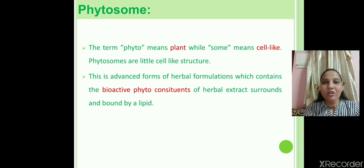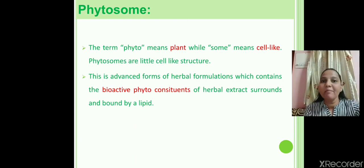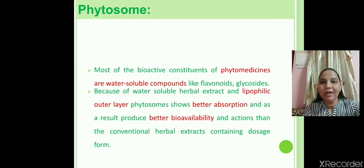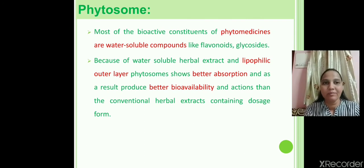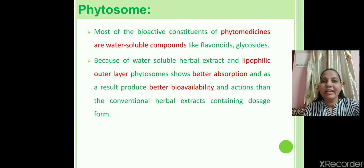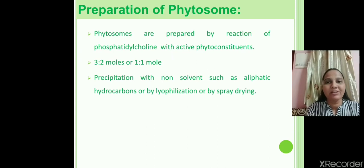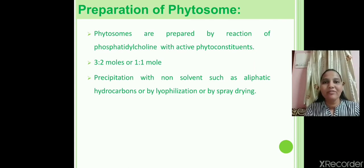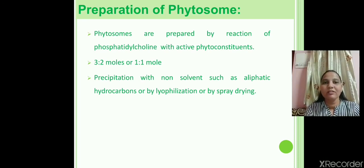What are phytosomes? 'Phyto' means plant and 'some' means a cell-like structure. This is an advanced form of herbal formulation in which the bioactive phytoconstituents of herbal extract are surrounded and bound by a lipid. Phosphatidylcholine or soya lecithin can be used as the lipid. Most phytoconstituents are water-soluble — for example, flavonoids or glycosides — so they are easily bound by the lipid, increasing viability. Phytosomes are prepared by reaction of phospholipids with phytoconstituents in different proportions: 1:1, 1:2, or 3:2 moles.